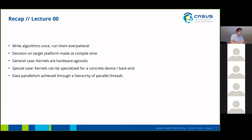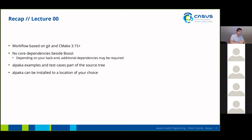The idea of Alpaca is to write algorithms once and run them everywhere. The decision on the target platform is made by the programmer at compile time. In the general case, kernels are hardware-agnostic and should be written as such. However, if you really need it, kernels can also be specialized for a concrete device or concrete backend. Data parallelism in Alpaca is achieved through a hierarchy of parallel threads. Our typical development workflow is based on Git and CMake 3.15.